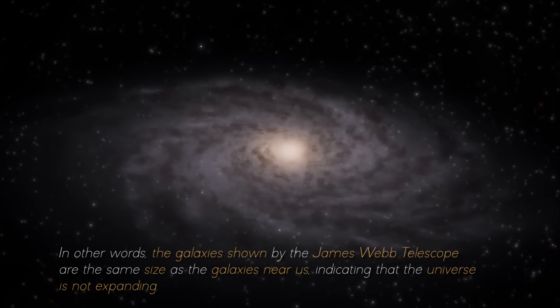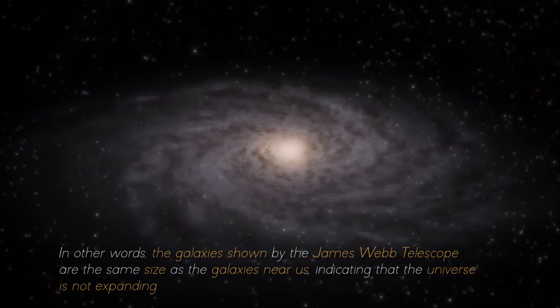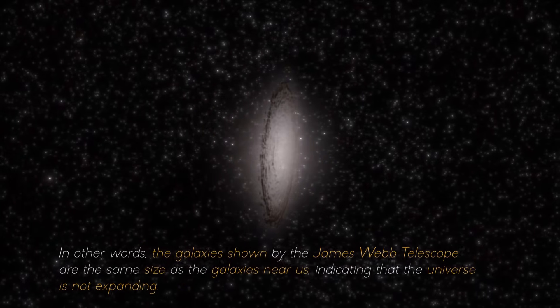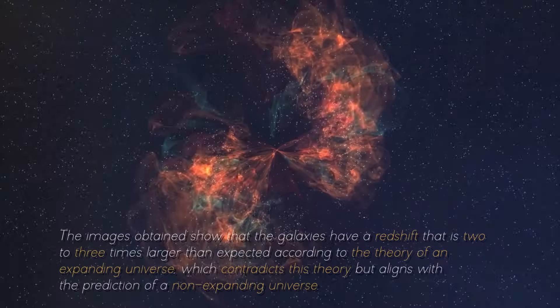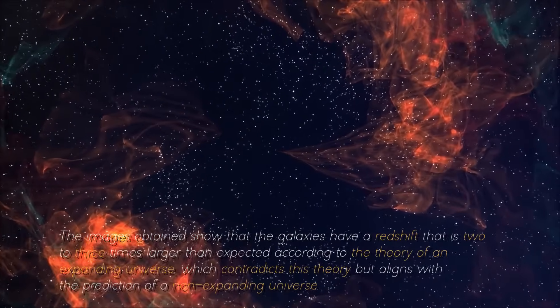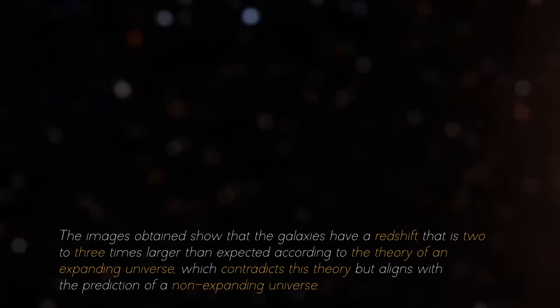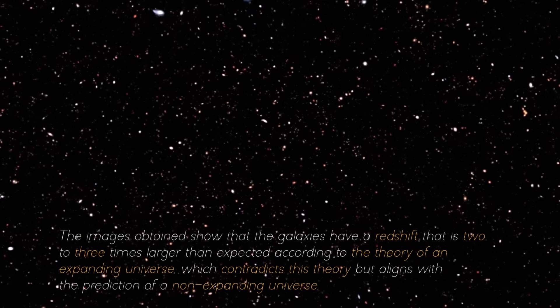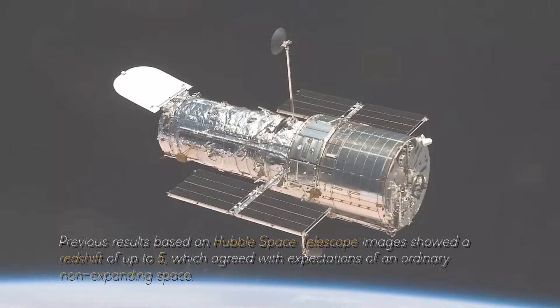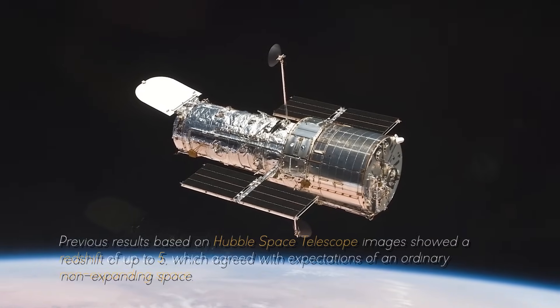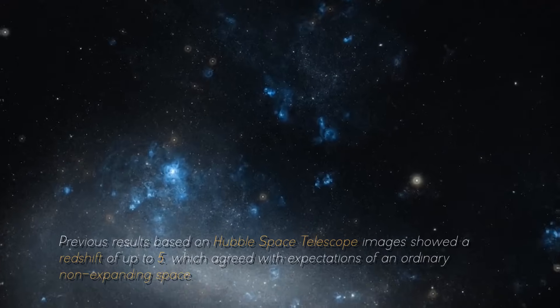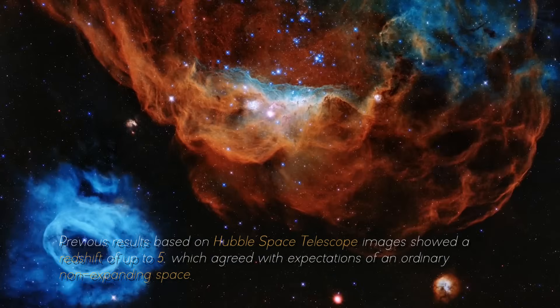Suggesting that the universe is not expanding and that the redshift is proportional to the distance of galaxies. In other words, the galaxies shown by the James Webb Telescope are the same size as the galaxies near us, indicating that the universe is not expanding. The images obtained show that the galaxies have a redshift that is two to three times larger than expected according to the theory of an expanding universe, which contradicts this theory but aligns with the prediction of a non-expanding universe.